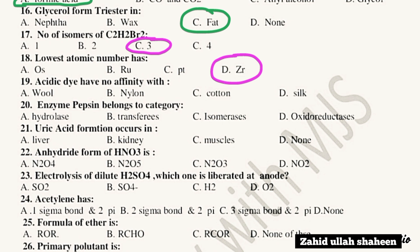Question 19: Acidic dye has no affinity with — the answer is contact ketones.